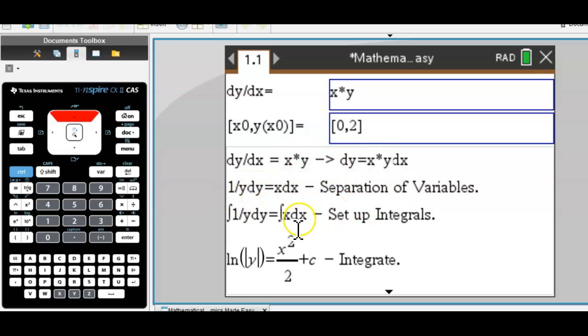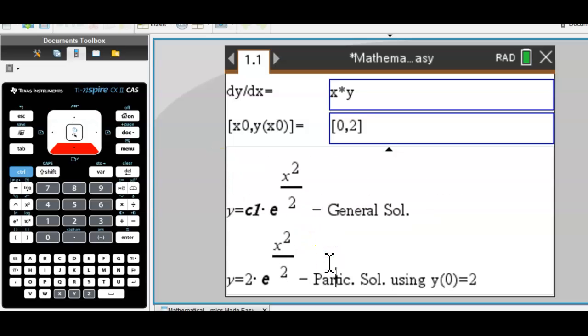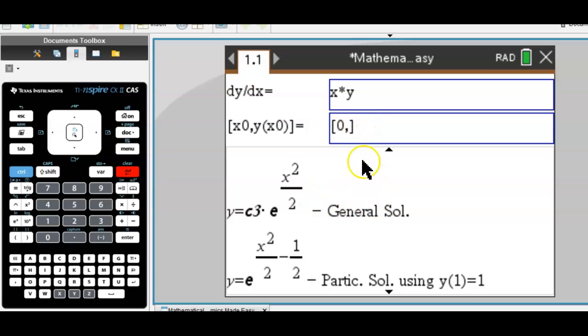The y's go on the left, the x's go on the right. Integration yields the general solution, and your initial condition (0,7) used here will then give you the particular solution.